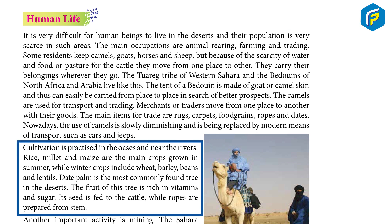Cultivation is practiced near the rivers and main settlements. Rice and maize are the main crops grown in the summer, while winter crops include wheat, barley, beans, and lentils. Date palm is the most commonly found tree in the desert. The fruit of the tree is rich in vitamins and sugar. Its seeds are fed to the cattle while ropes are prepared from its stem.